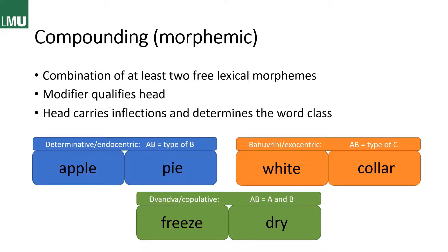Then we have bahuvrihi or exocentric compounds, where the compound AB is a type of C — something else entirely. The example here is 'white-collar,' which remotely has to do with the color of a collar, but actually means somebody who works in an office. So it's not describing a particular collar — it's just a person who works in an office.